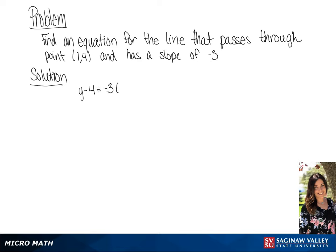We're going to put this into point-slope form: y minus 4 equals negative 3 times (x minus 1).